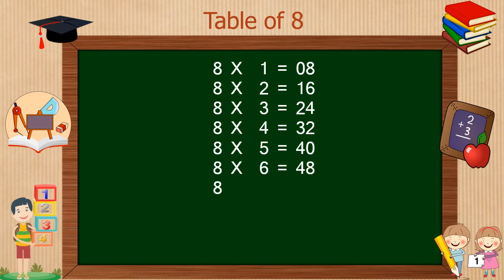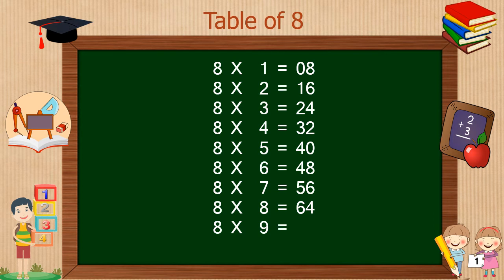8 times 7 is 56, 8 times 8 is 64. Today I am giving you two different techniques to remember and write down the table of 8 very quickly and easily.